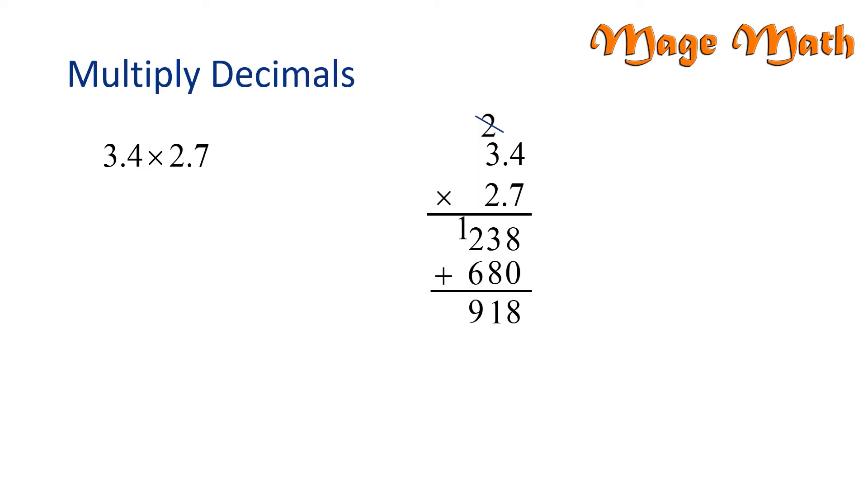It's time to determine where our decimal point will go. Since both 3.4 and 2.7 have 1 decimal place each, our answer will have 2 decimal places. Essentially, we're adding up the value of each decimal place. 1 decimal place plus 1 decimal place is 2 decimal places. So, we found that 3.4 times 2.7 is 9.18. Great job!